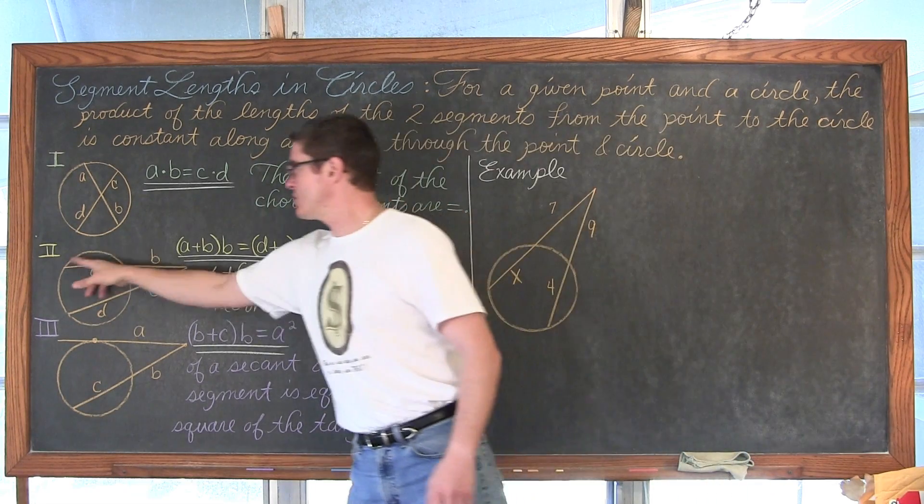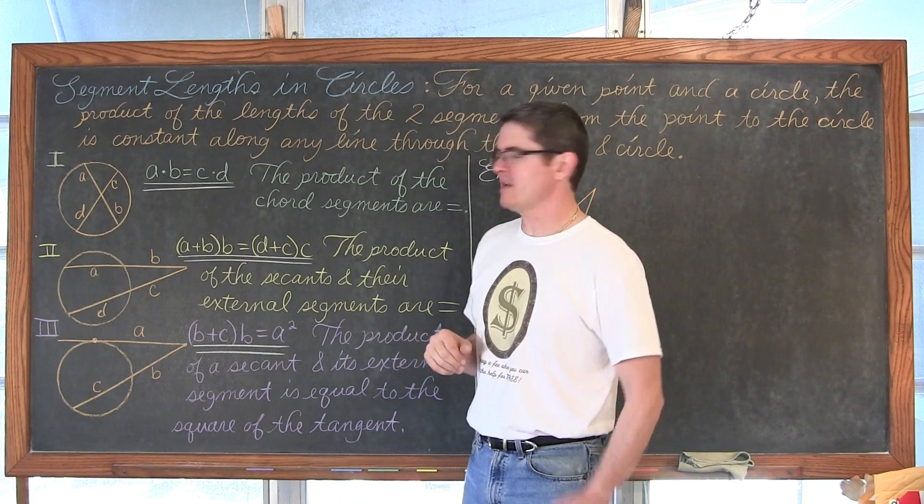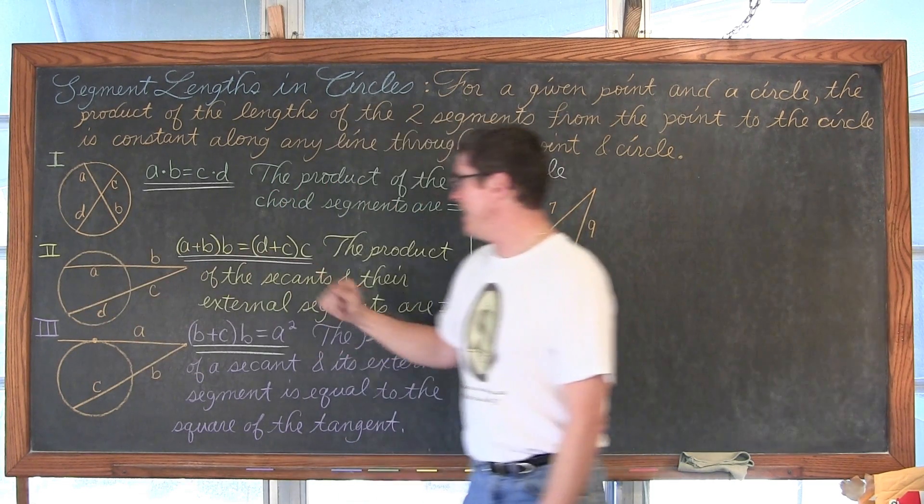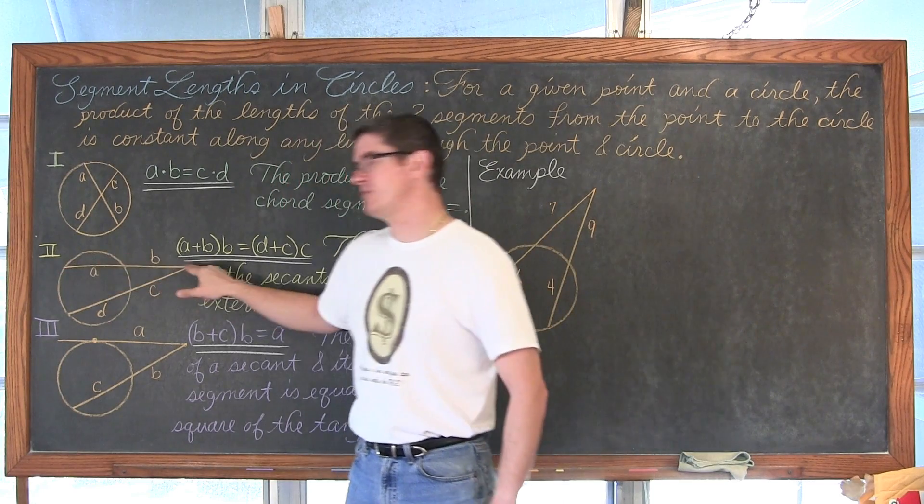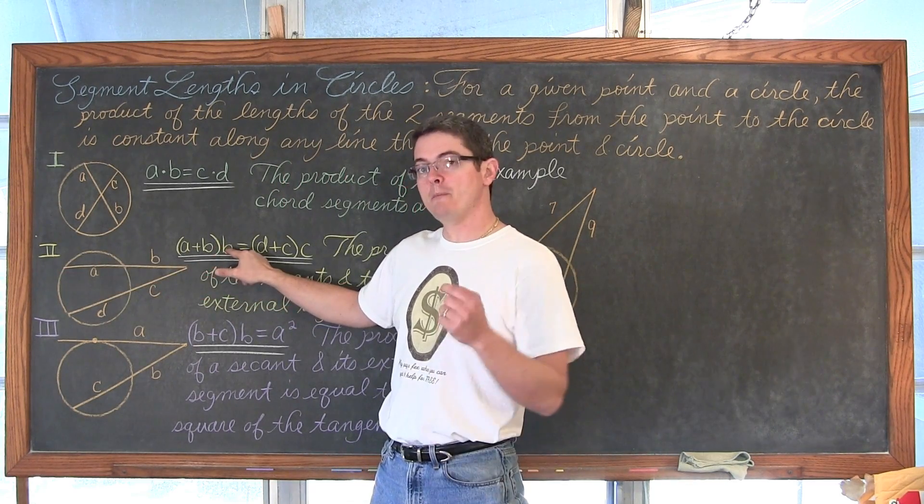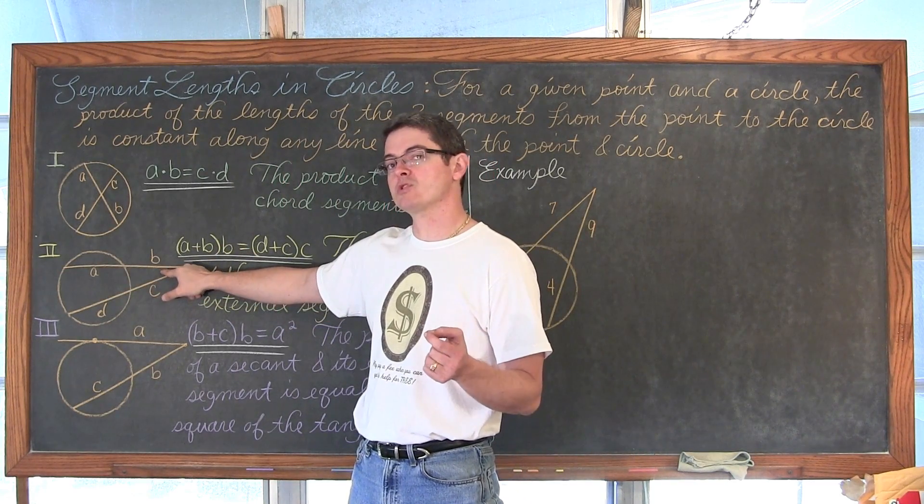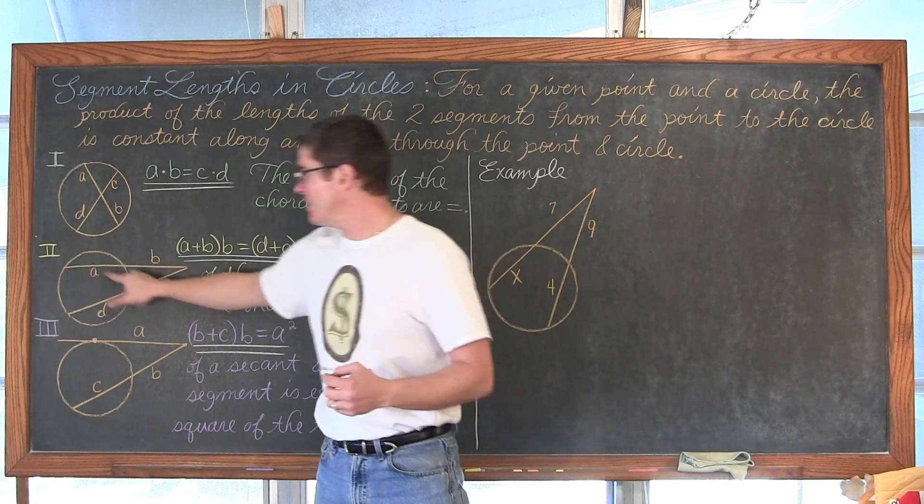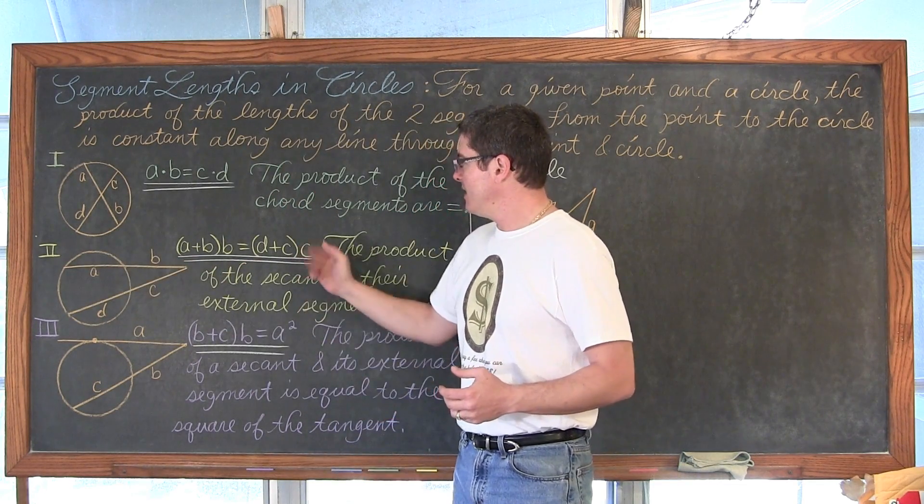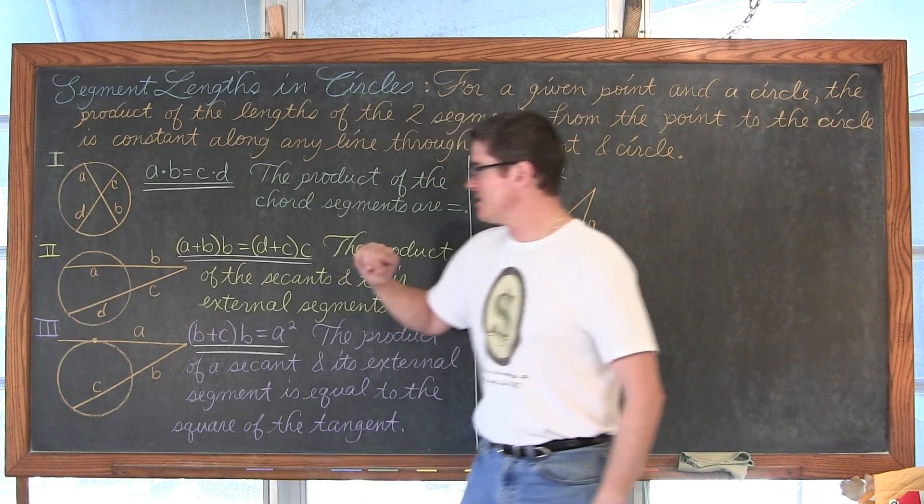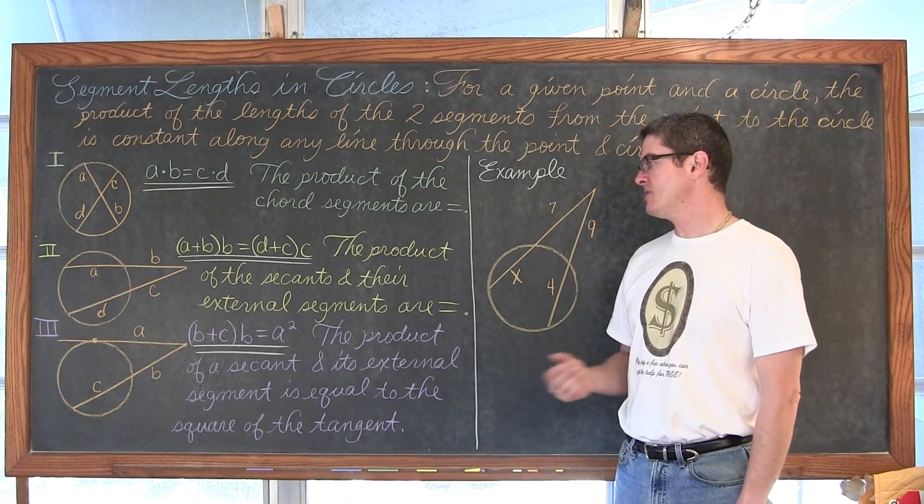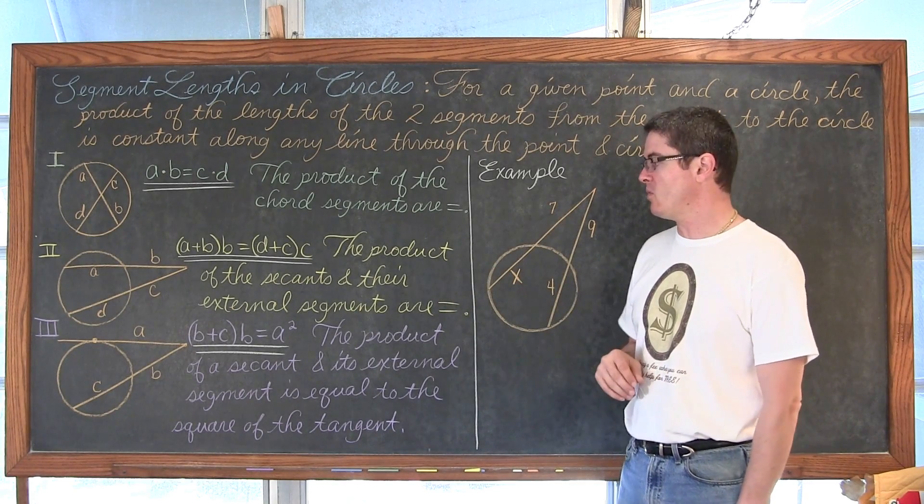Here we have two secants that are intersecting our circle. We have A plus B, the entire length of this secant, times B, the outside portion or the part of that secant that is not on the interior of the circle, is equal to the entire secant times C, the external part. Or the product of the secants and their external segments are going to be equal.